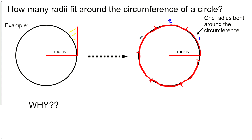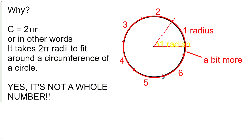There's the first one, the second, the third, the fourth, the fifth, the sixth — and there's a bit more. So just over six radii can fit around the circumference of a circle. No matter how big the circle is, there will be six and a bit more. Why? Because we have the formula for circumference: it's 2πr, which means 2π times the radius equals the circumference — in other words, 2π radii fit around the circumference of any circle.